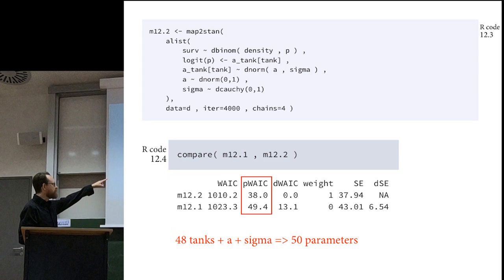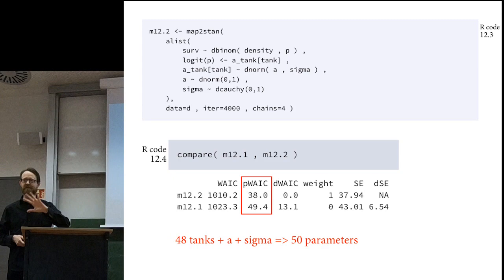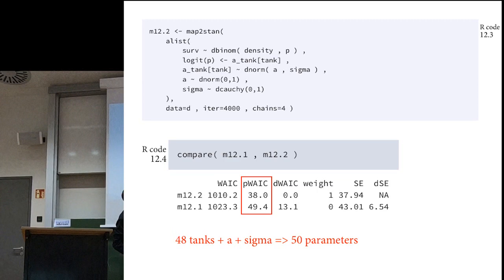Model 12.2 has 50 parameters: 48 tanks plus alpha and sigma. So there are 50 dimensions in the posterior distribution—a 50-dimensional hyperspace. But the estimated flexibility of the model is in the ballpark of a model with only 38 parameters. Why is that the case? Let's think about this model as defining a spectrum of an infinite number of models with different fixed values of sigma.